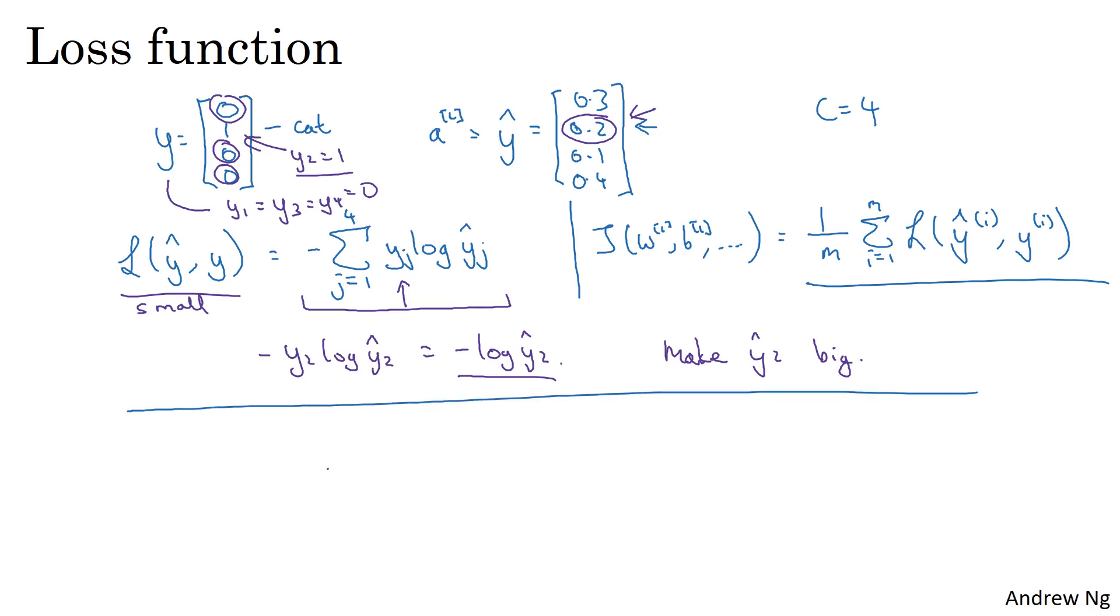Finally, one more implementation detail. Notice that because C is equal to 4, y is a 4 by 1 vector, and y hat is also a 4 by 1 vector. So if you're using a vectorized implementation, the matrix capital Y is going to be y1, y2, through ym, stacked horizontally. And so for example, if this example up here is your first training example, then the first column of this matrix Y will be 0, 1, 0, 0. And then your second example, maybe the second example is a dog, maybe the third example is a none of the above, and so on. And then this matrix capital Y will end up being a 4 by m dimensional matrix.